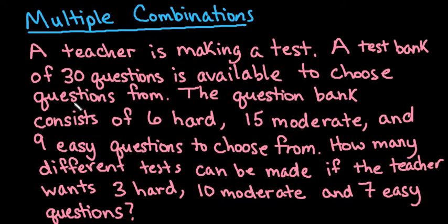So what we have here is a teacher is making a test. A test bank of 30 questions is available to choose questions from. The question bank consists of 6 hard, 15 moderate, and 9 easy questions to choose from. How many different tests can be made if the teacher wants 3 hard questions, 10 moderate questions, and 7 easy questions?